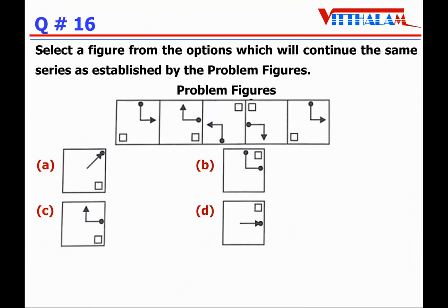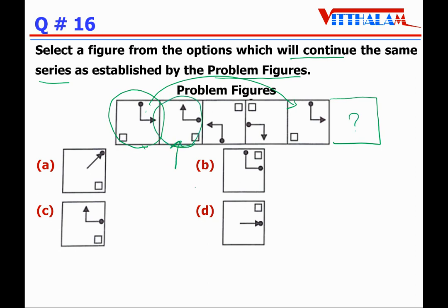Question 16: Non-verbal reasoning — select a figure from the options which will continue the same series as established by the problem figure. You can see that the first figure is repeated after four figures, which means the next figure in the series will be the arrow. This matches option C, so the answer is C.